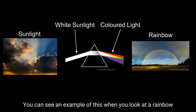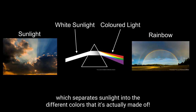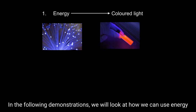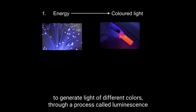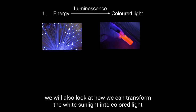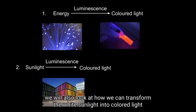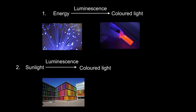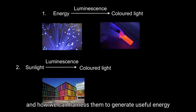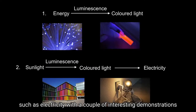You can see an example of this when you look at a rainbow, which separates sunlight into the different colors that it's actually made of. In the following demonstrations we will look at how we can use energy to generate light of different colors through a process called luminescence, and how we can transform white sunlight into colored light and harness it to generate useful energy such as electricity.